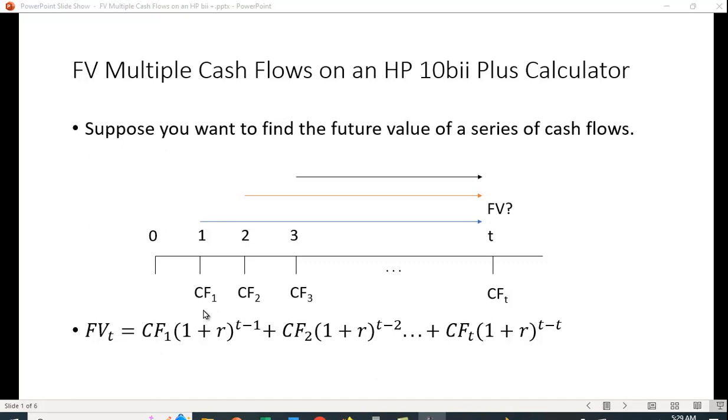So if the cash flows begin in year one, you would compound this out for t minus one periods. Remember, you're starting in time period one, not time period zero. So when you count it out, it's going to be t minus one periods. Likewise, with the cash flow in year two, that's going to grow for t minus two periods.